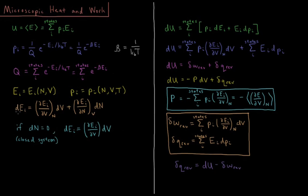If we consider how the energy changes during some infinitesimal change in the system, then dEi, the change in a given energy level, is its partial derivative with respect to volume at constant N times dV, plus the partial derivative of the energy level with respect to number of particles at constant volume times the change in number of particles. This is a standard total differential from multivariable calculus.